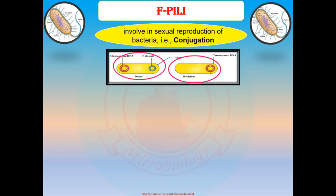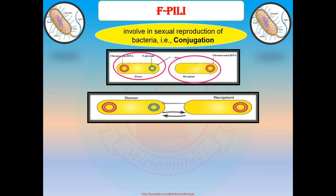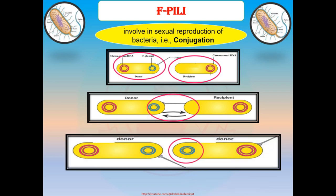A conjugation tube forms and the plasmid is transferred to the recipient bacterium. After transfer, the recipient also becomes a donor cell, because it now contains plasmids and can share them with another bacterium. Both bacterial cells are now called donor cells or F-plus cells.